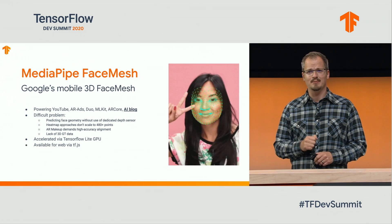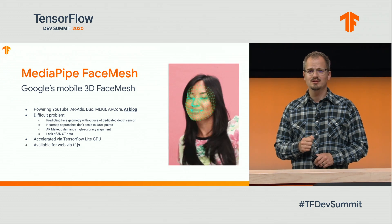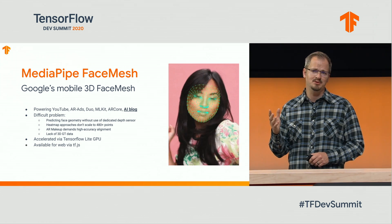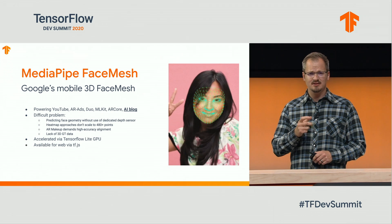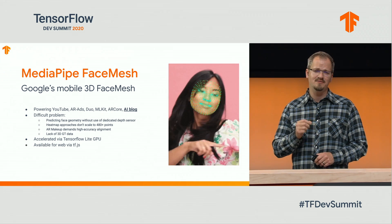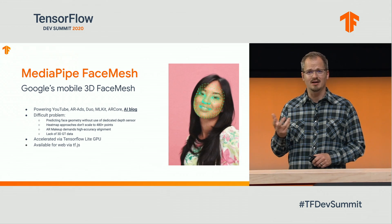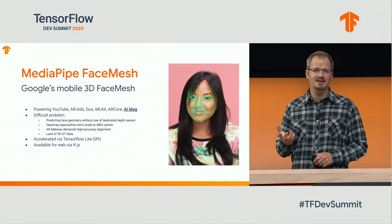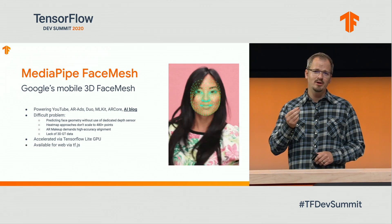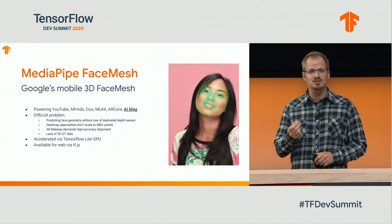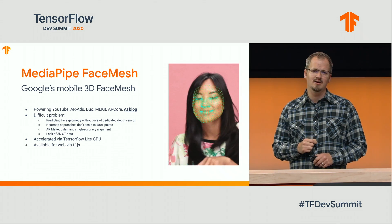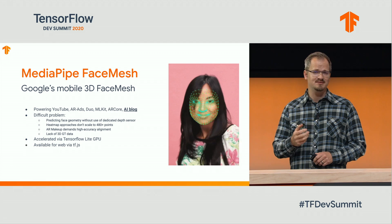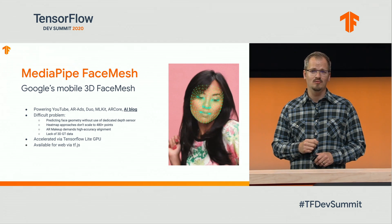Let's jump in with our first ML solution, and that is MediaPipe face mesh — Google's mobile 3D face mesh driving applications like YouTube, Duo, and third-party APIs like MLKit and ARCore. It's a quite difficult problem to try to predict the high-fidelity face geometry without the use of dedicated hardware like a depth sensor. Because we're predicting 486 points, classical approaches like heatmaps don't really apply, and we have to achieve high quality. For applications like virtual makeup, we really want to be able to faithfully track the lip contour so that results look realistic. MediaPipe face mesh is accelerated with TensorFlow Lite GPU and is available to developers via TF.js.